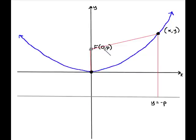If I called the focus at zero P, then the point on this line equidistant away from it has to be a distance of P away from it. In other words, it has to be at Y equals negative P. Now, let's actually find out an equation that will describe all these points that are equidistant from the focus to this line.